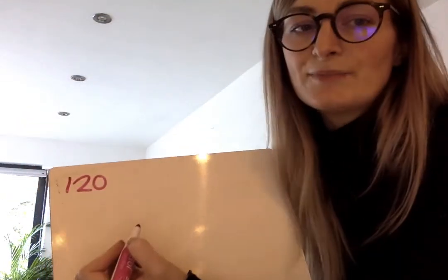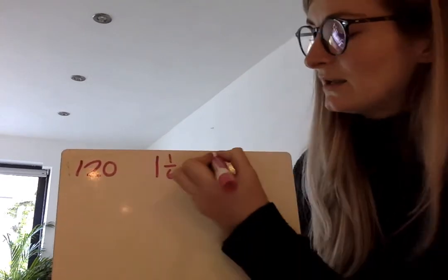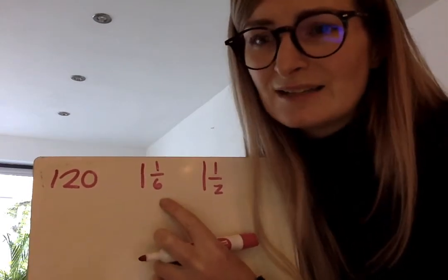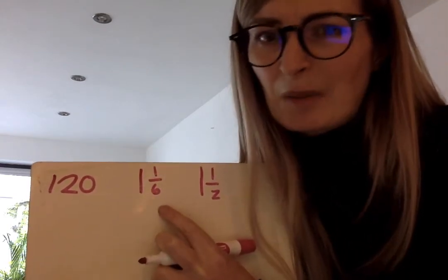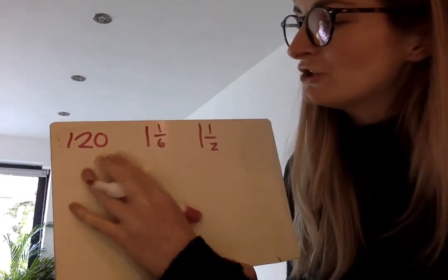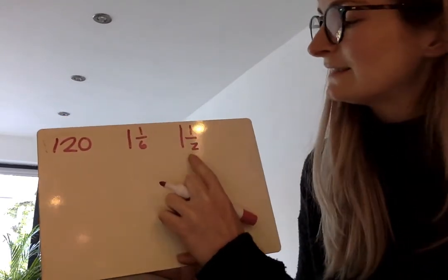Question three. They're going to have a party to celebrate their two years in business. They think 120 guests are going to come and each person will eat one and one sixth of a pizza and one and one half bottles of juice. What a great party. Who eats over one pizza at a party? So we need to work out how much they need to order.